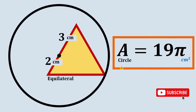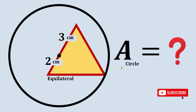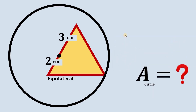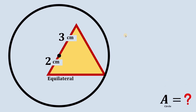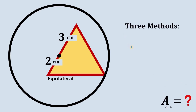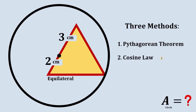Let me show you three different methods to answer this kind of question. The first method is the Pythagorean theorem. The second is the cosine law, and the last one is the Stewart theorem. Now let's begin with the Pythagorean theorem.